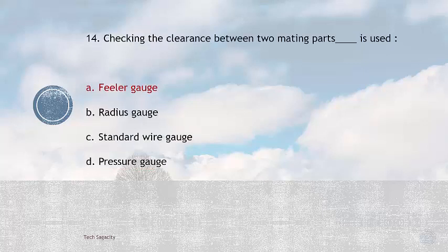For checking the clearance between two mating parts, feeler gauge is used. Options are feeler gauge, radius gauge, standard wire gauge, and pressure gauge. The answer is feeler gauge.